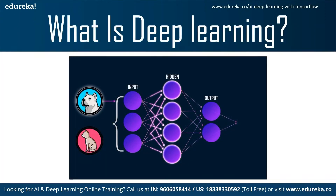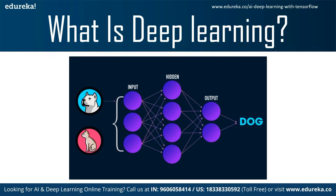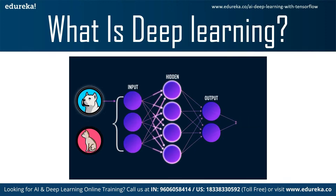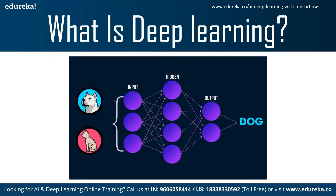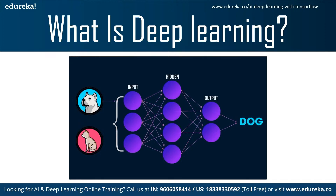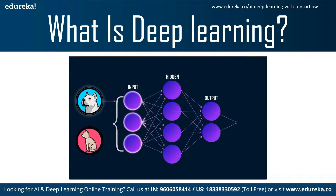Deep learning is a part of a broad family of machine learning methods which are based on learning data patterns, in opposition to what a machine learning algorithm does. In machine learning, we have algorithms for a specific task, whereas the deep learning algorithm can be supervised, semi-supervised, or unsupervised. Deep learning is inspired by the human brain and how it perceives information through the interaction of neurons.